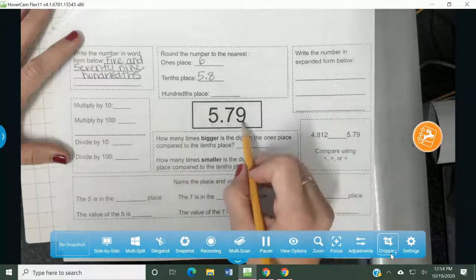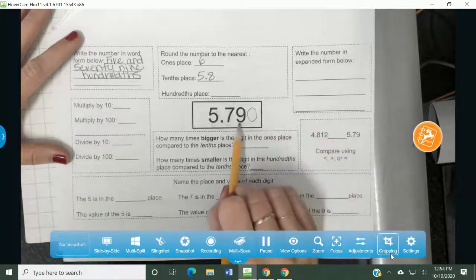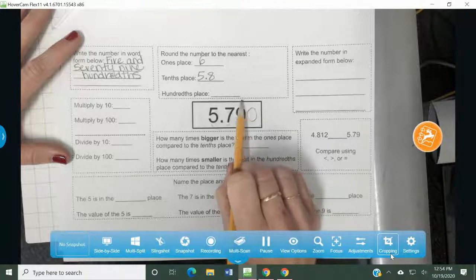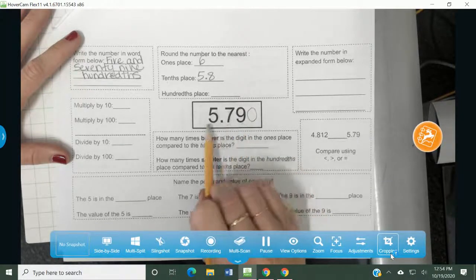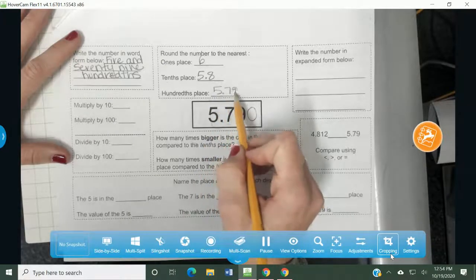The hundredths place. What is sitting next to the digit in the hundredths place? It's a zero. It's an imaginary zero. So this nine, if I look over to the right and it's a zero, it's four or less. We let the nine rest, so this number stays the same and these will be included. Five and seventy nine hundredths.